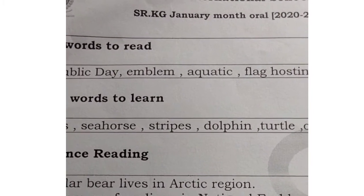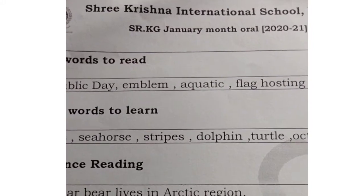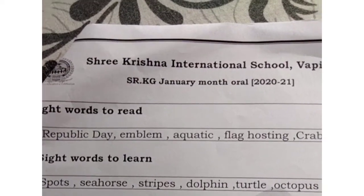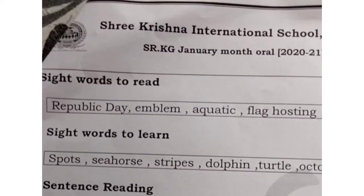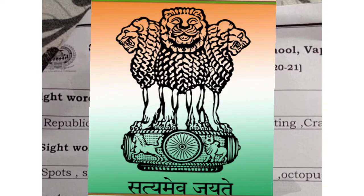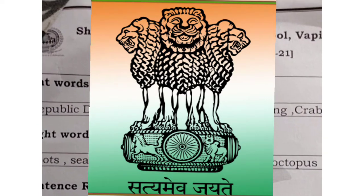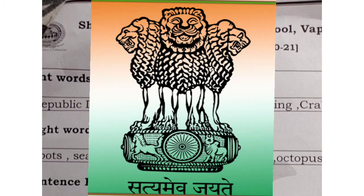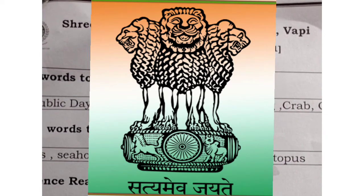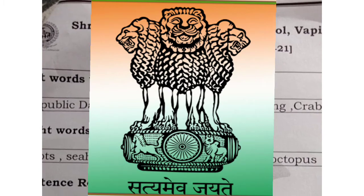Next is emblem. E-M-B-L-E-M. Emblem means representing something. So what is India's national emblem? Ashoka's pillar. Very good — it has 4 lions facing in 4 different directions: North, East, West, and South. So what is India's national emblem? Ashoka's pillar.